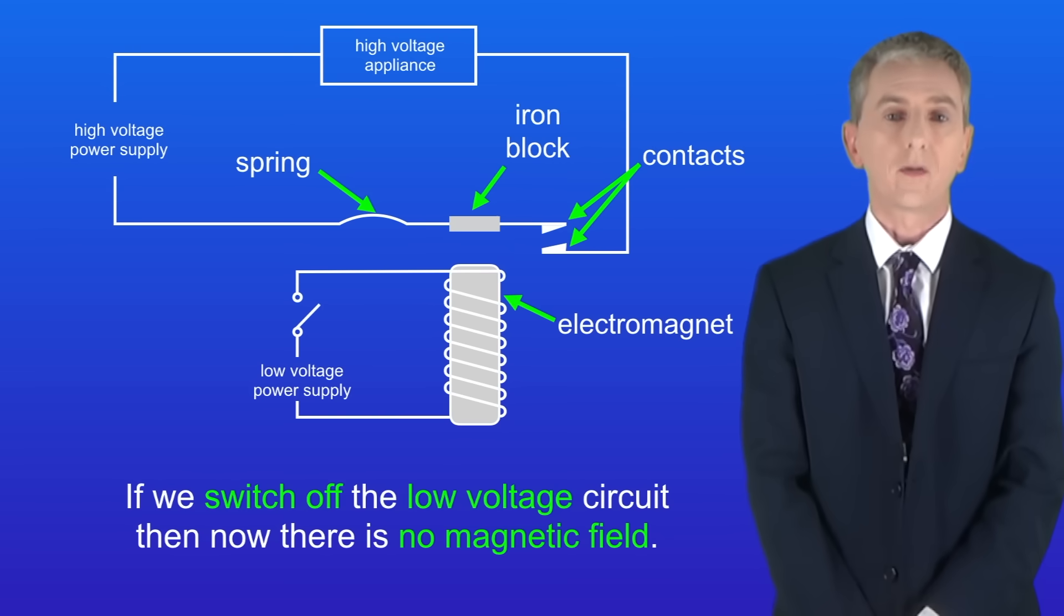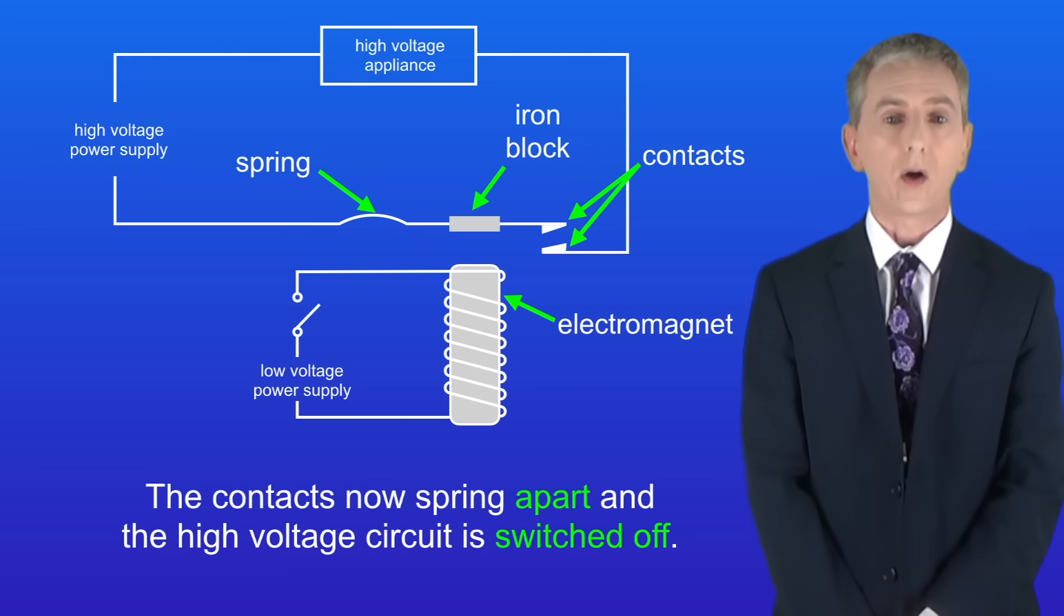If we switch off the low voltage circuit, then now there's no magnetic field. The contacts now spring apart and the high voltage circuit is switched off.